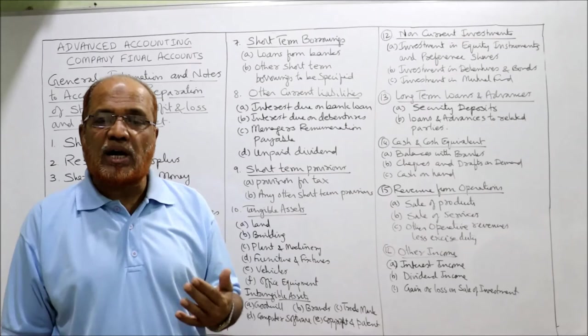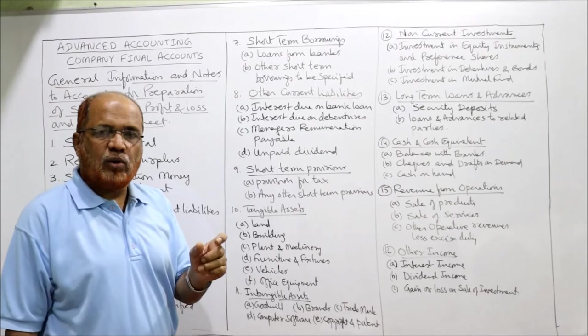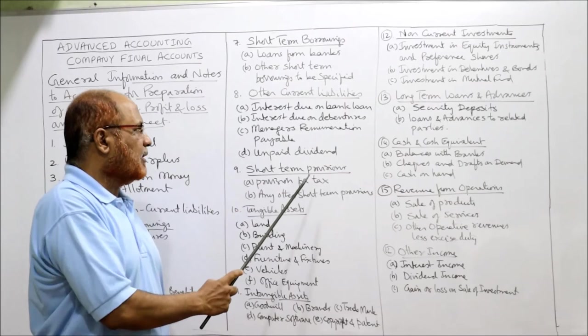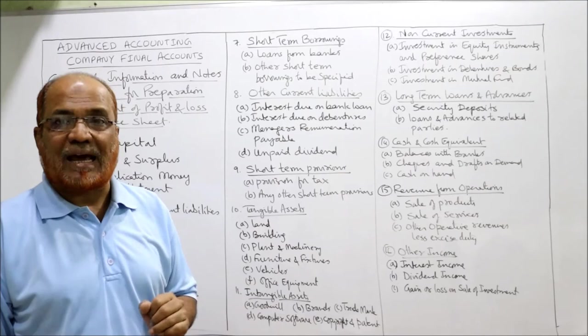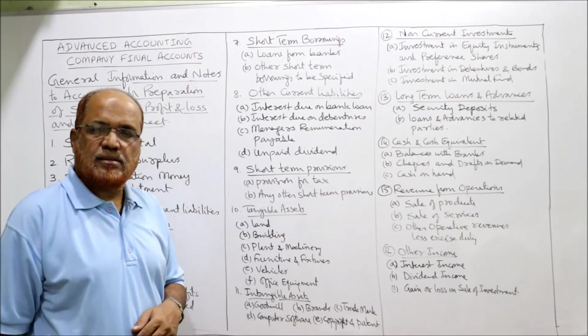Other current liabilities include: manager's remuneration payable, unpaid dividend, outstanding expenses, outstanding salary, and outstanding rent. Any amount due within one year comes under other current liabilities. Under short-term provisions, we take provision for taxation and any other short-term provisions.